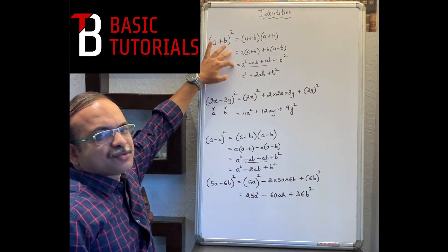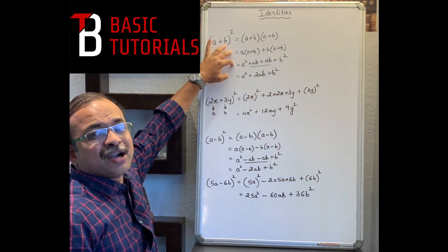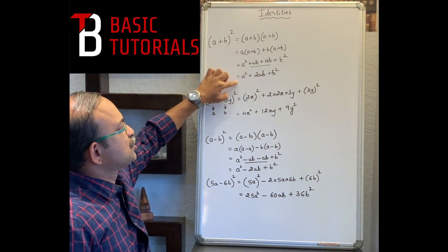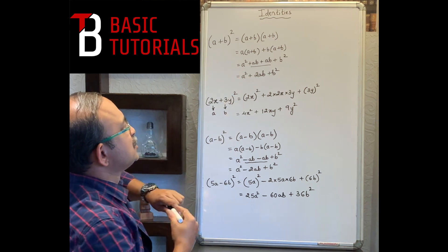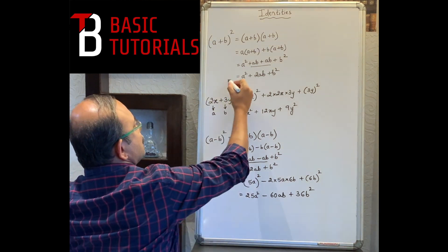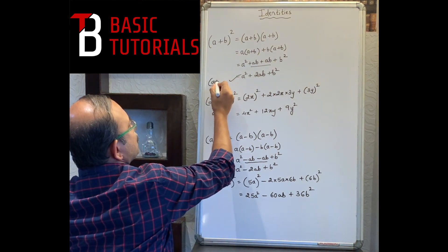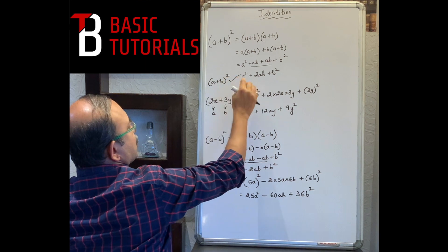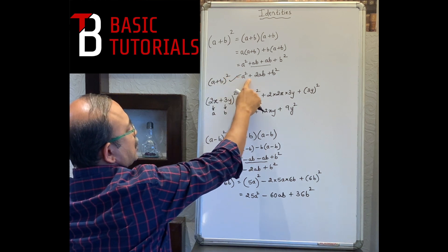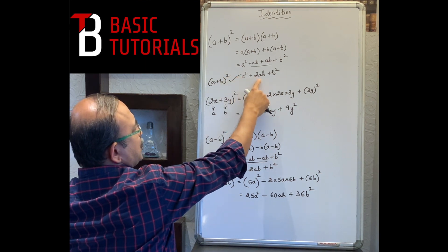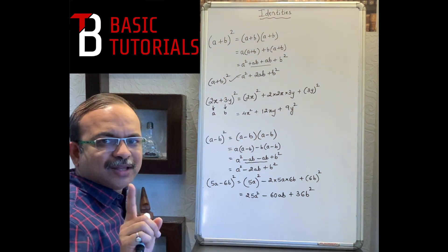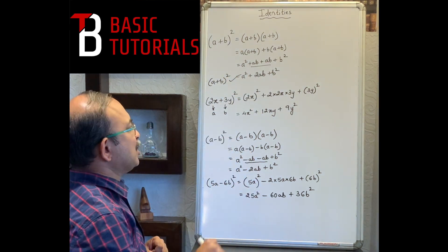Those two steps were for your understanding. Now you are supposed to just remember the final result: (a+b)² = a² + 2ab + b². Let's take one example now.